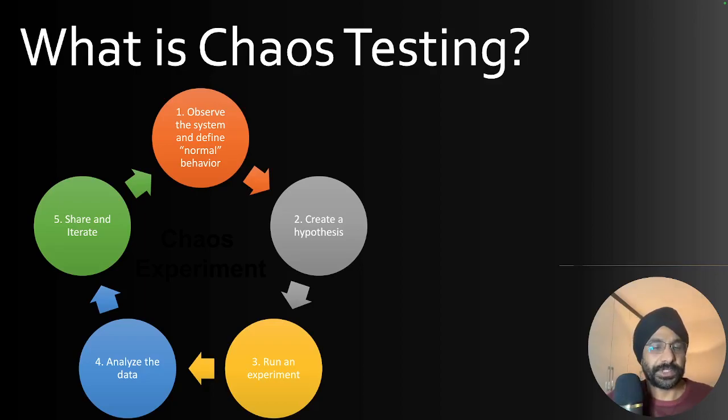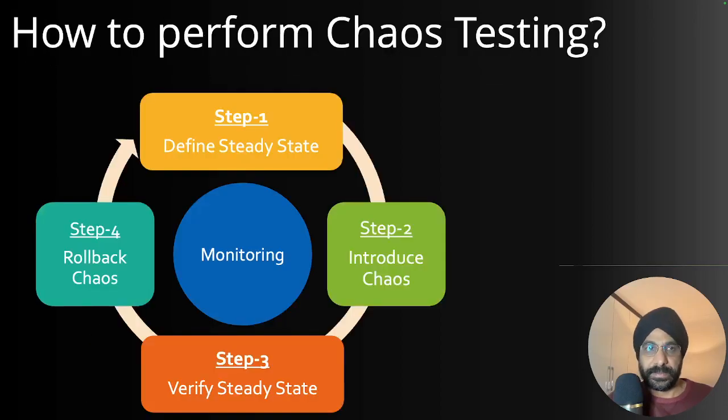How to perform chaos testing? Let's try to put this into practical terms. You define steady state - this is how my system runs, it meets all the SLAs. Introduce chaos. You can introduce chaos in various shapes and forms. Simulate a failure, something like a network bottleneck, disk fill, or application crash.